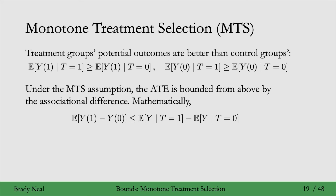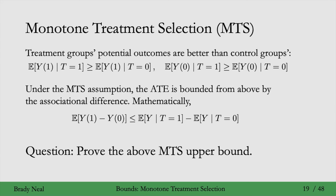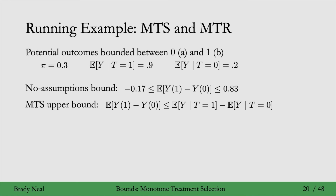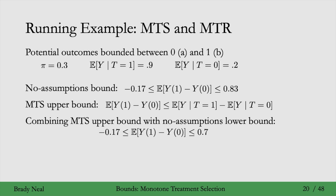Rather than walking through this proof, the next question is to prove the monotone treatment selection upper bound yourself — go ahead and pause here to try that. In the running example, recall the no-assumptions interval. The monotone treatment selection upper bound comes from the naive difference: 0.9 minus 0.2 equals 0.7. Taking this MTS upper bound combined with the no-assumptions lower bound, we get this interval.